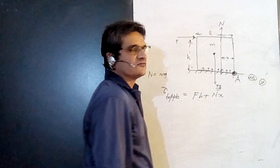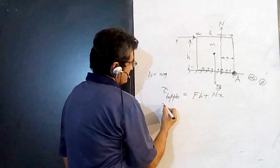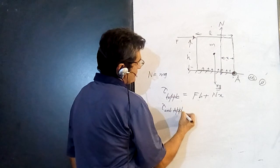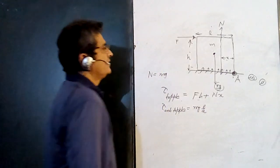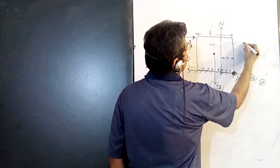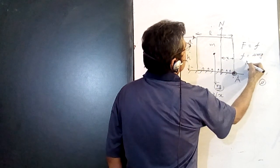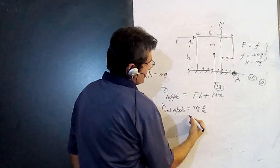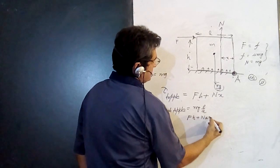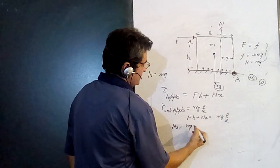Nature doesn't want it to topple, so x has to be as small as possible. Taking the situation where it is in equilibrium: the anti-topple torque is mg times L/2. Since F equals mu times mg (as N equals mg), setting toppling equal to anti-toppling gives: F·H + N·x = mg·L/2.